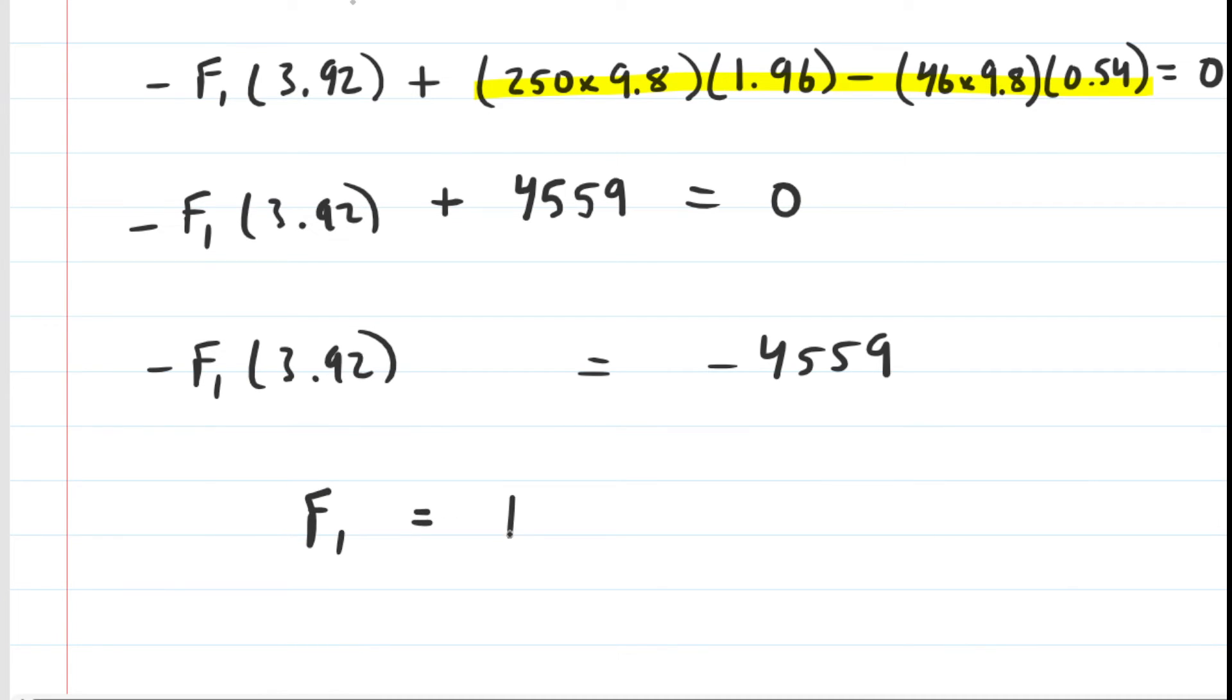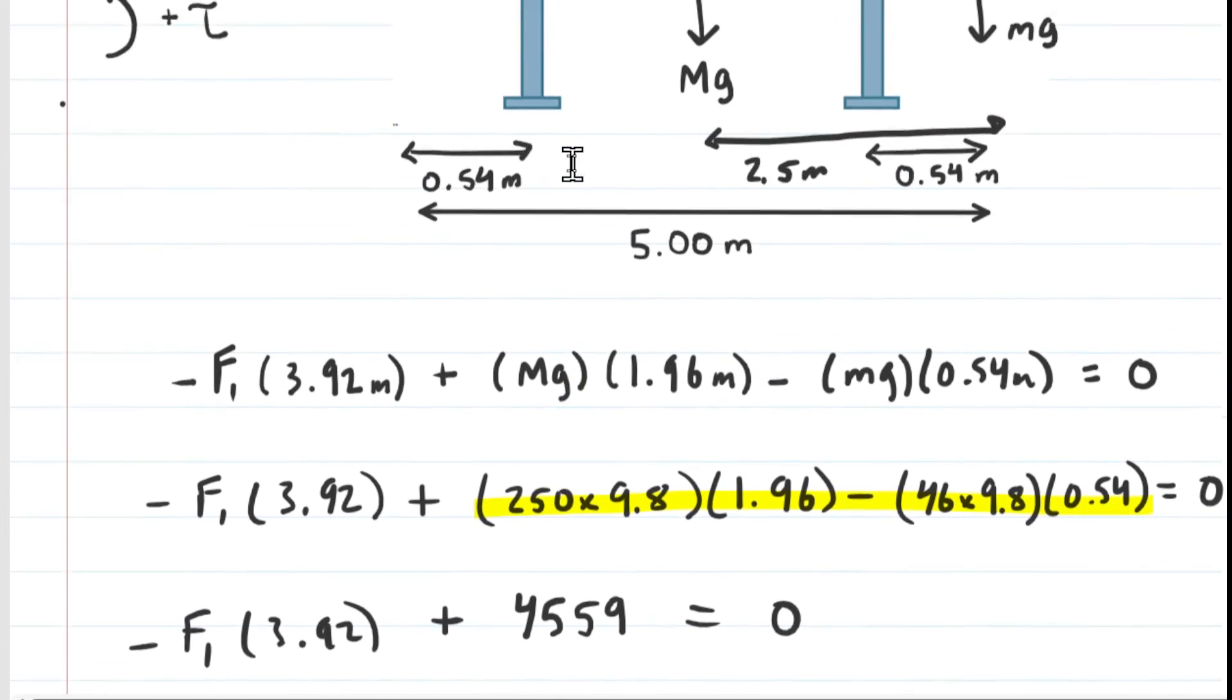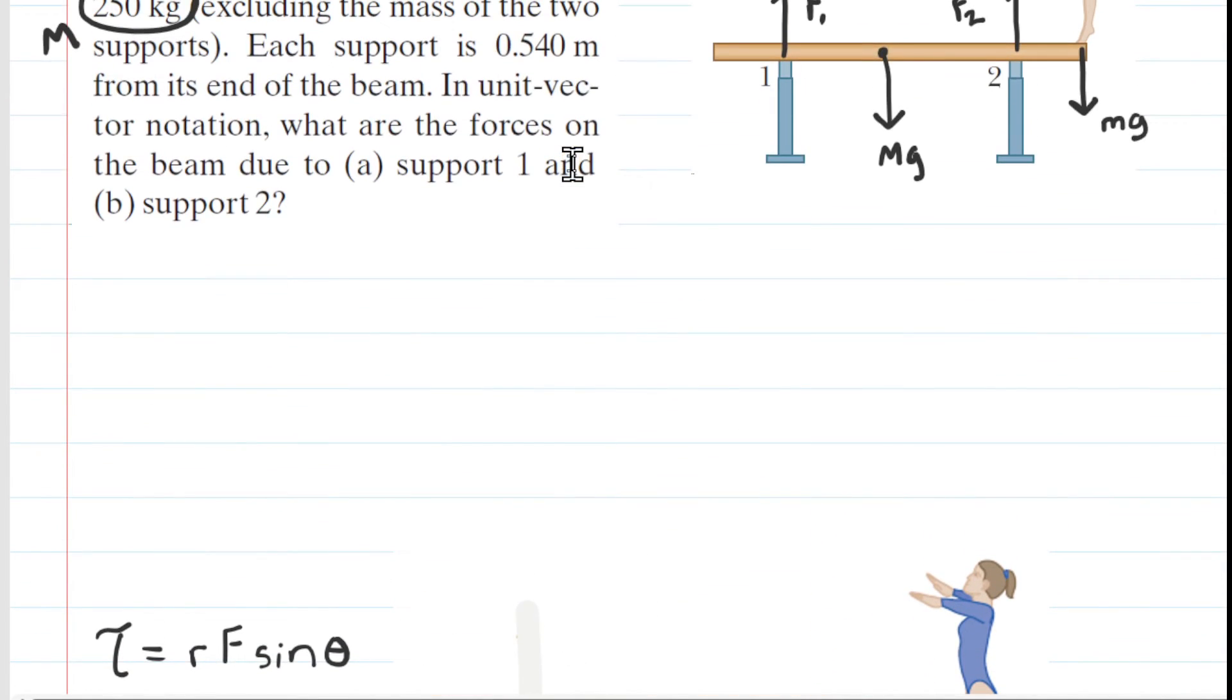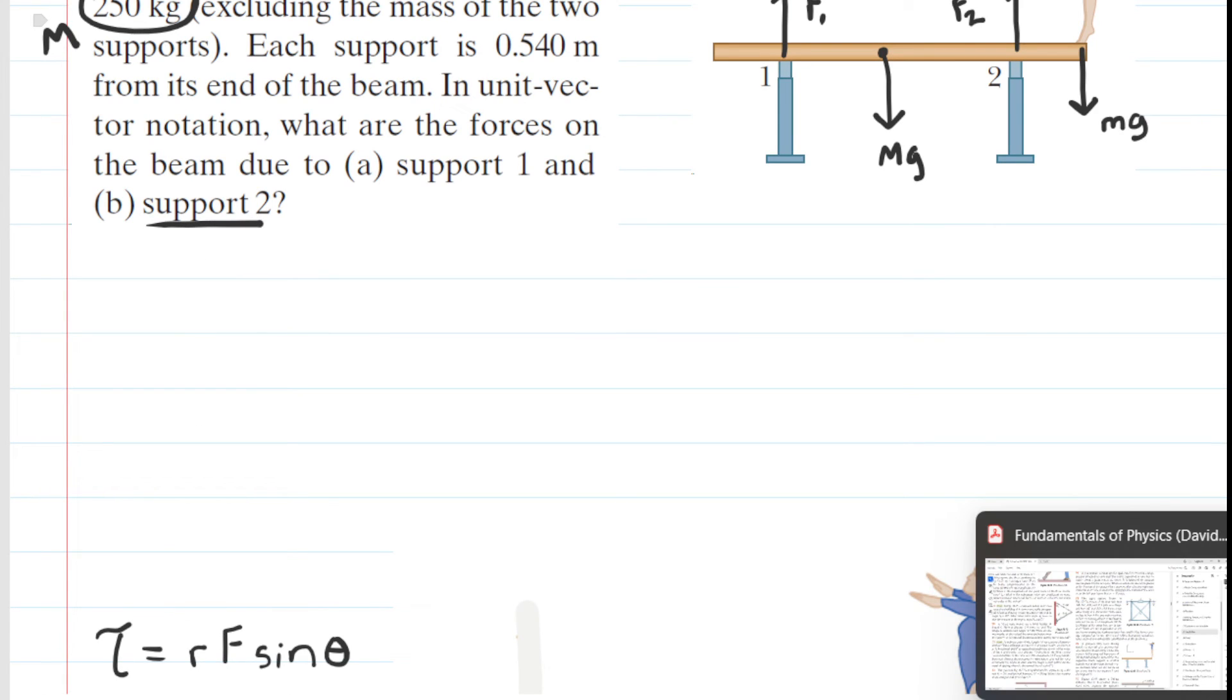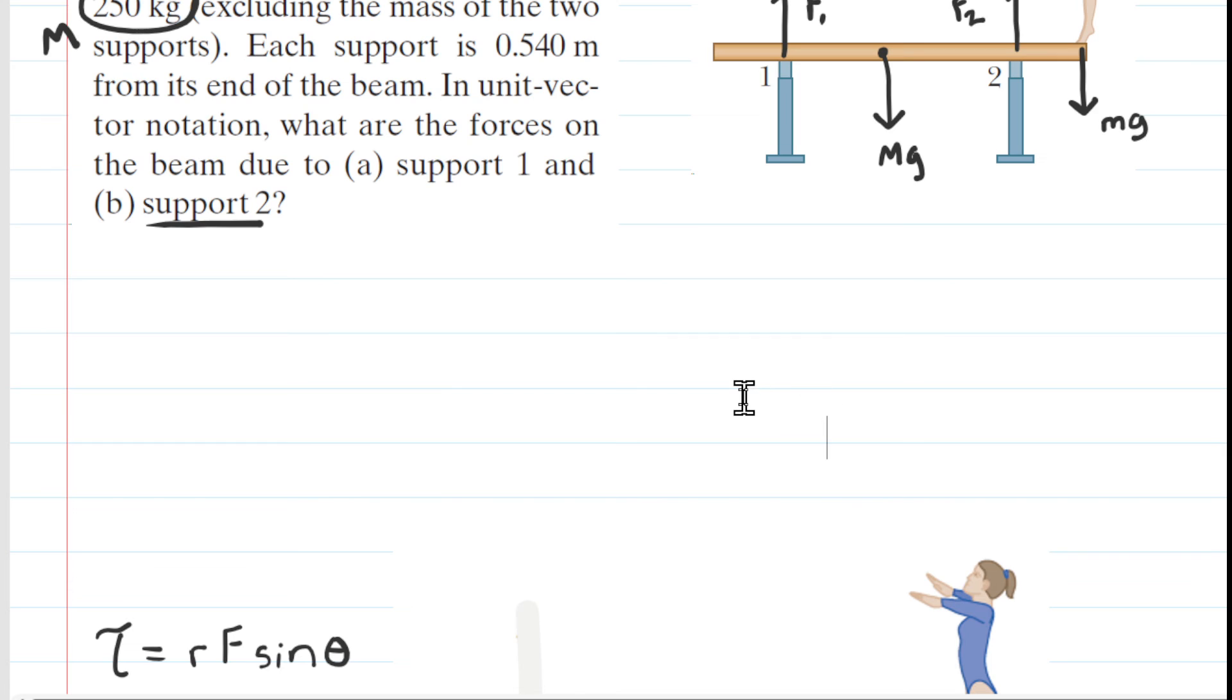This is all set equal to zero. You could subtract the 4,559 and then divide both sides by negative 3.92. When you do that, you're going to get a force F1 equal to approximately 1,163 newtons. That's the correct answer to part A of the question. In part B, we're going to figure out what the F2 force is. That was the force exerted by support number two. We can do that using torque, but we can also do that using Newton's second law.